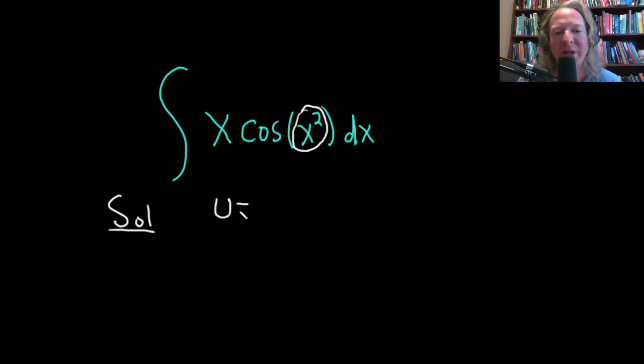So we'll let u be equal to x squared, and then we'll compute du. So basically, we're taking the derivative of both sides. On the left, we simply get du. On the right, we use the power rule for derivatives. So you bring down the 2, you get 2x, and then you subtract 1 from the exponent. So 2x to the first power, dx.